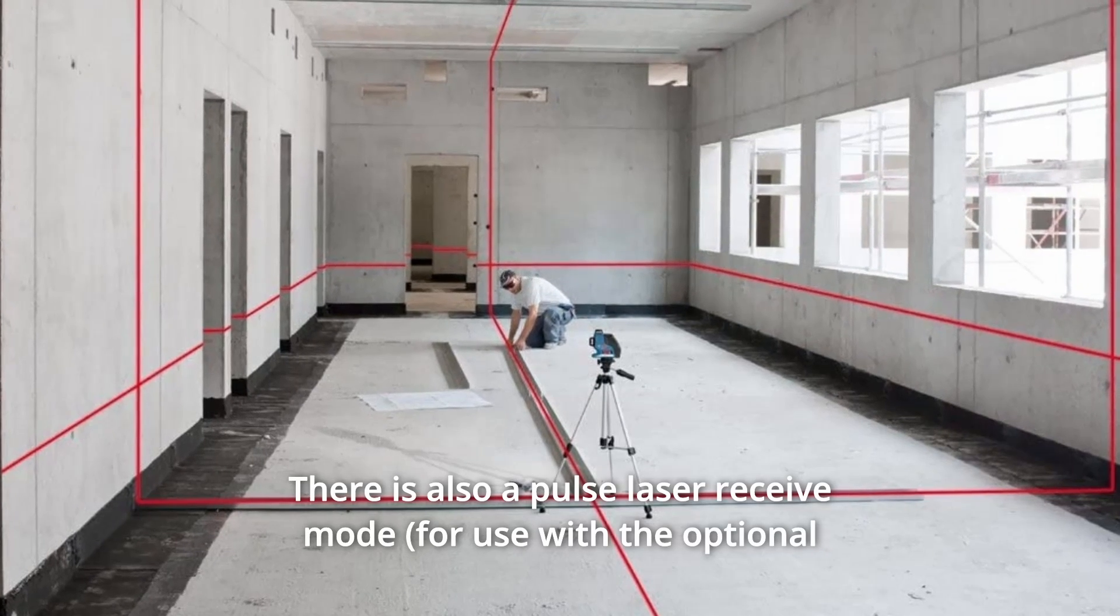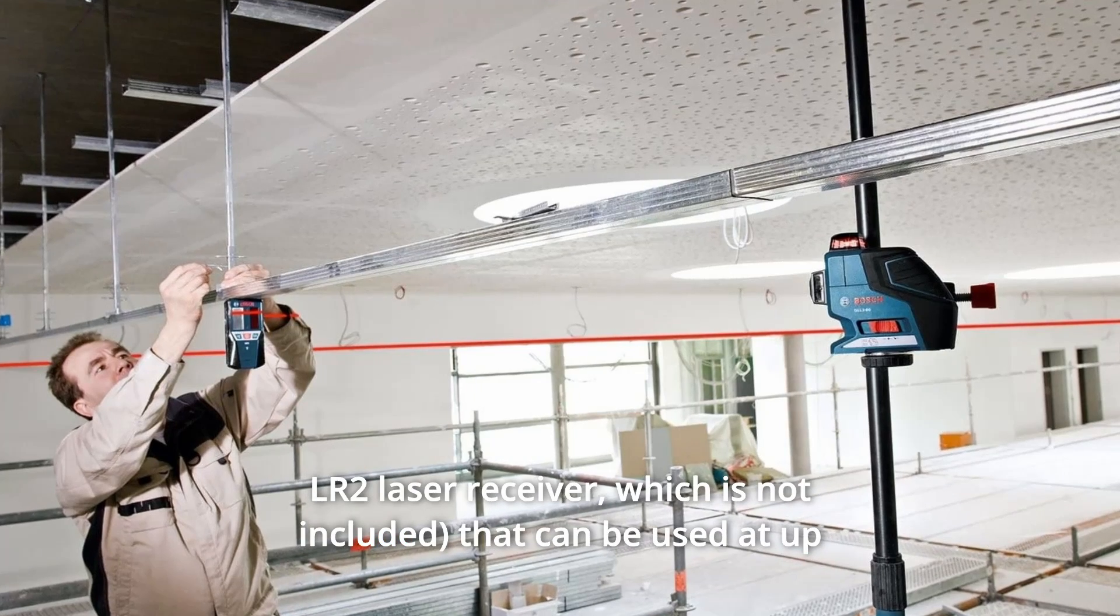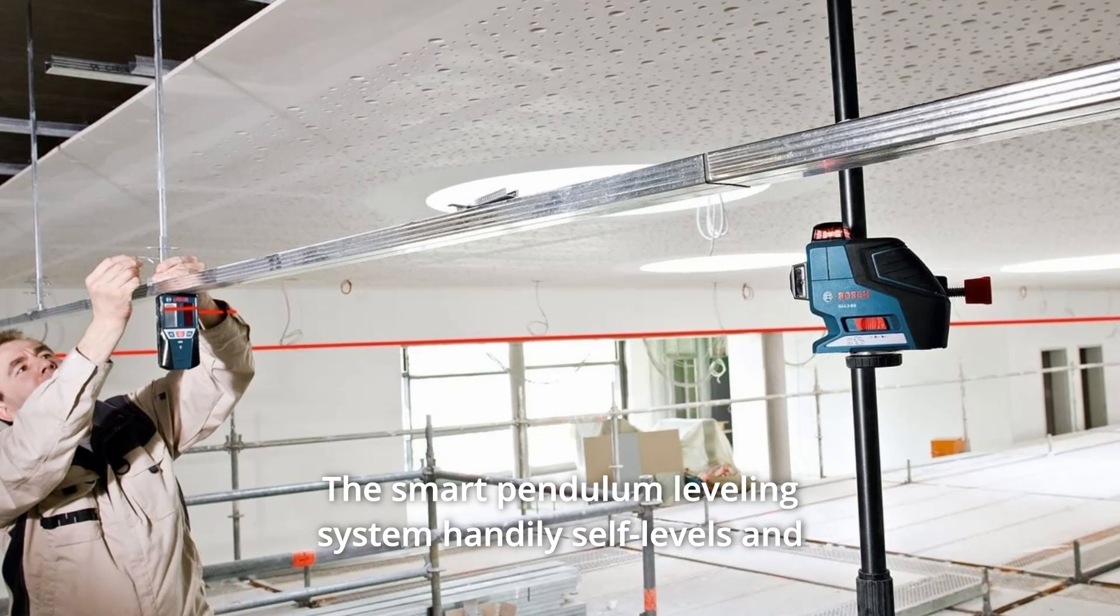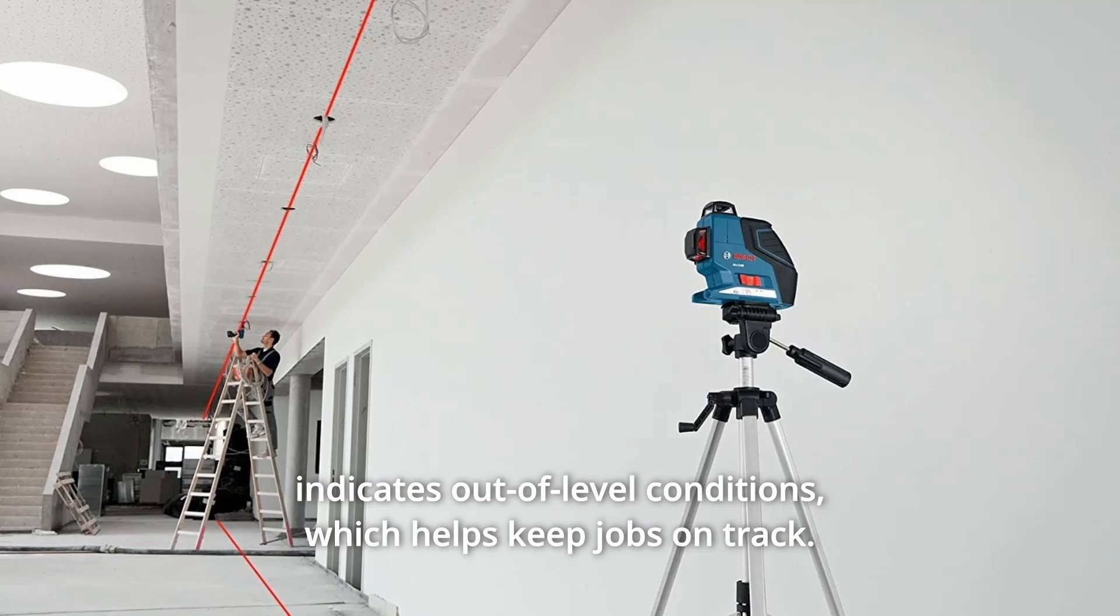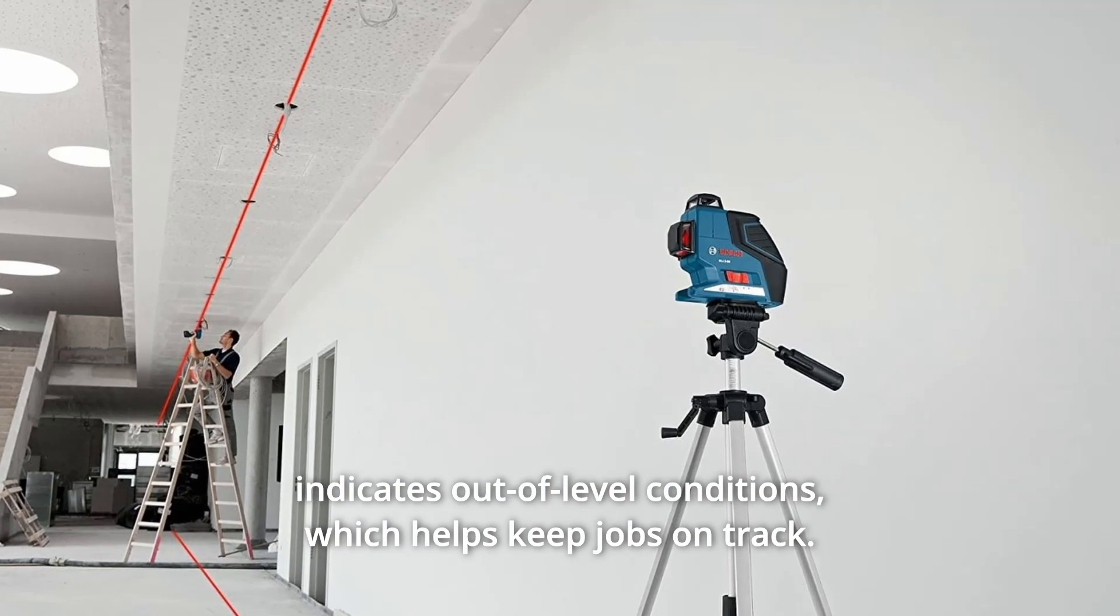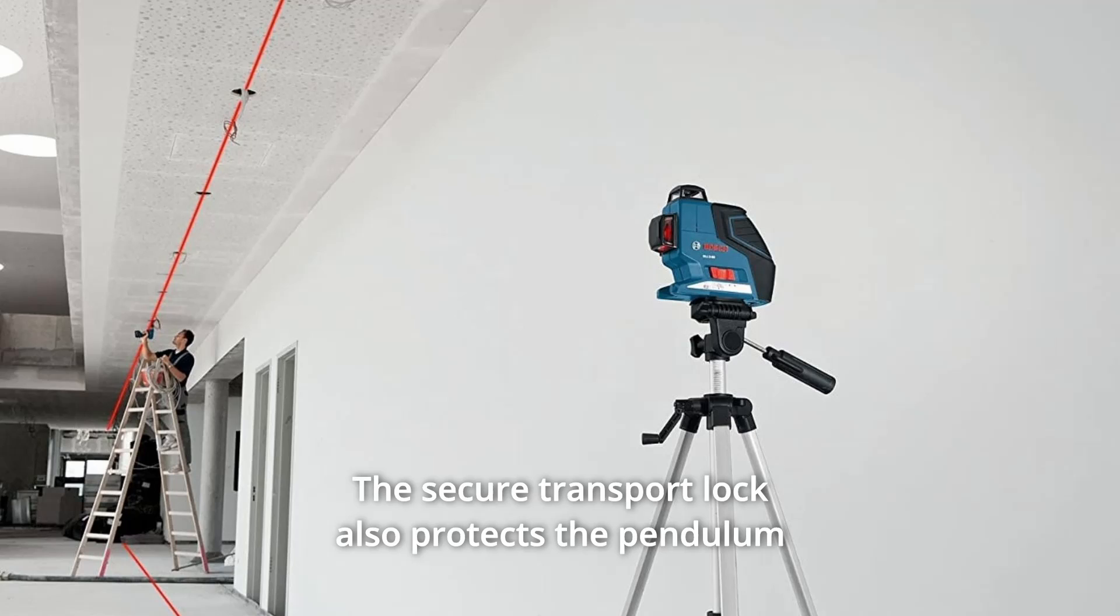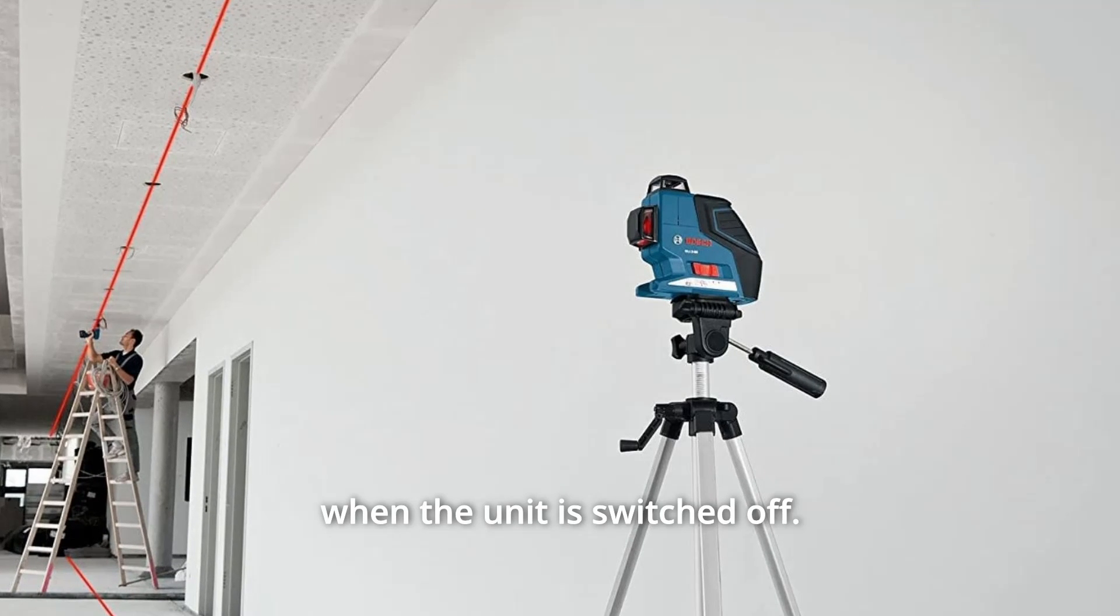There is also a pulse laser receive mode that can be used at up to 265 feet in all bright light. The smart pendulum leveling system handily self-levels and indicates out-of-level conditions, which helps keep jobs on track. The secure transport lock also protects the pendulum when the unit is switched off.